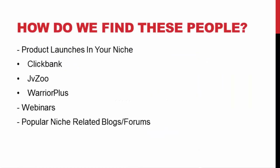How do you find people with a huge email list in your niche? There are multiple ways. Product launches are one — every niche has people launching information products. You can head over to ClickBank, JVZoo, Warrior Plus, or any affiliate network and search for products in your niche. You can also find people doing webinars and reach out to them — webinars are really hot right now. Or you can find blogs or forums related to your niche. Remember, we're only trying to find people with large lists — thousands and thousands of people they can send to your squeeze page.